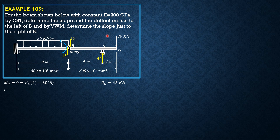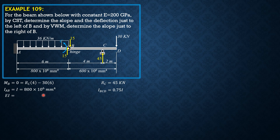Let's select this sectioning. I_AB is 800 times 10 to the 6, and let's call that I. So I for BCD is 600 over 800, which is 0.75 of I. EI would be 200 times 10 to the 6 kilopascals times 800 times 10 to the 6 over 1000 to the 4th to convert to kilonewton meter squared, giving EI equal to 160,000 kilonewton meter squared.